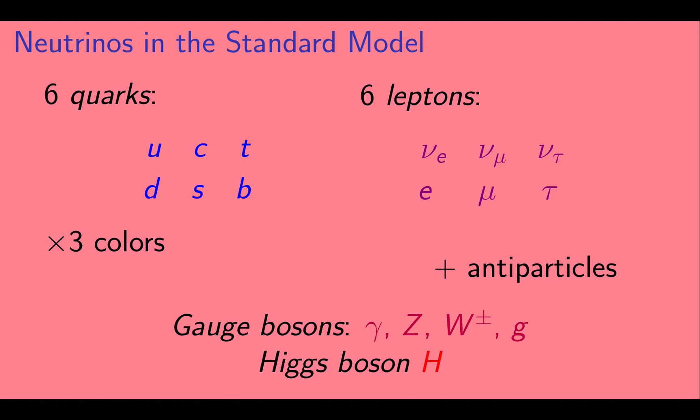Next, we have the gauge bosons, which transmit forces. They are the photon, Z, W plus and W minus, and the gluons. Finally, we have the Higgs boson.